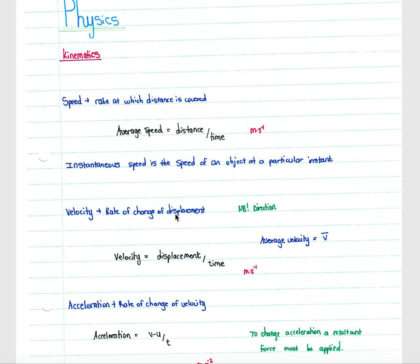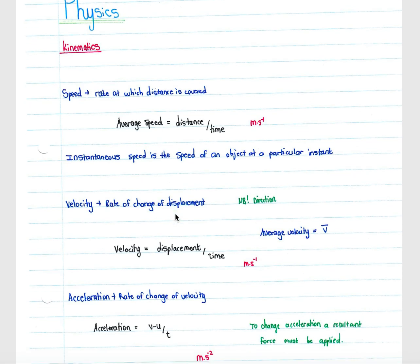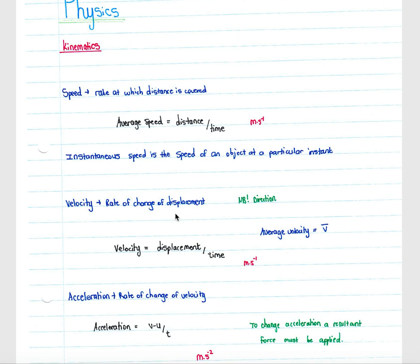Thirdly, you have acceleration, which is your rate of change of velocity. This indicates how quickly the velocity of an object is changing. Acceleration is calculated by taking your final velocity (v) minus your initial velocity (u), divided by the time for the period. Acceleration is also a vector quantity and must take into account direction of travel. When giving an answer for acceleration you must include the units — meters per second squared — and you must include your direction of travel.